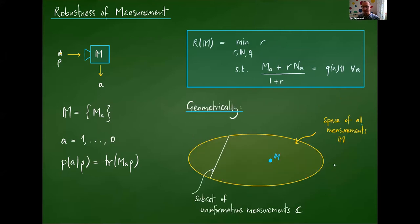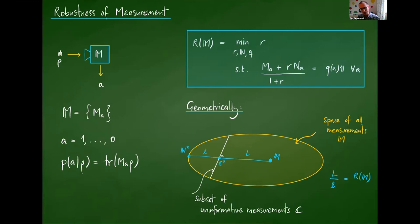Geometrically, we can think of the space of all measurements as a big convex set. There's a lower-dimensional subset of uninformative measurements. For a given measurement M of interest, the robustness is the optimal ratio of distances: the length from M to the uninformative set, relative to the length from there to the noisy measurement N on the other side. So it's essentially how close M is to the uninformative set relative to how far away a noisy measurement sits.